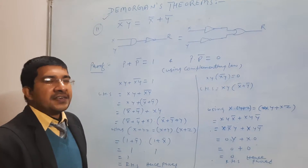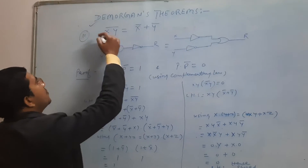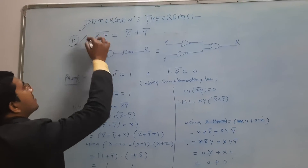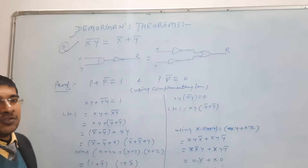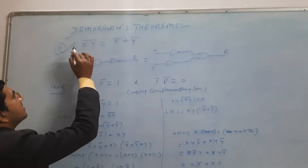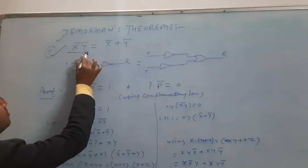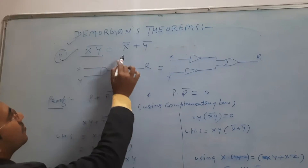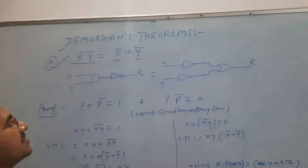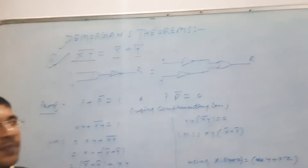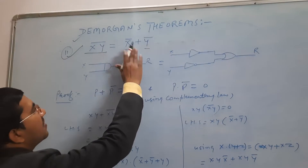Good morning students. In this lecture we are going to prove De Morgan's second theorem. The second theorem states that (xy)' = x' + y'. That means xy whole bar equal to x bar plus y bar.